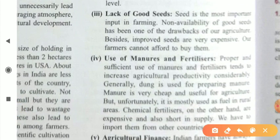The next point is the lack of good seeds. Seeds are the most important input in farming, and non-availability of good seeds has been a major drawback of Indian agriculture. Improved seeds are very expensive, and our farmers cannot afford to buy them, which is why the lack of HYV seeds remains a reason for low productivity.